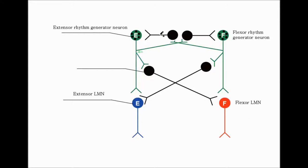You can see the design — the connections here — the branches from the rhythm generators. The rhythm generators activate the inhibitory interneurons, which inhibit the opposite side.